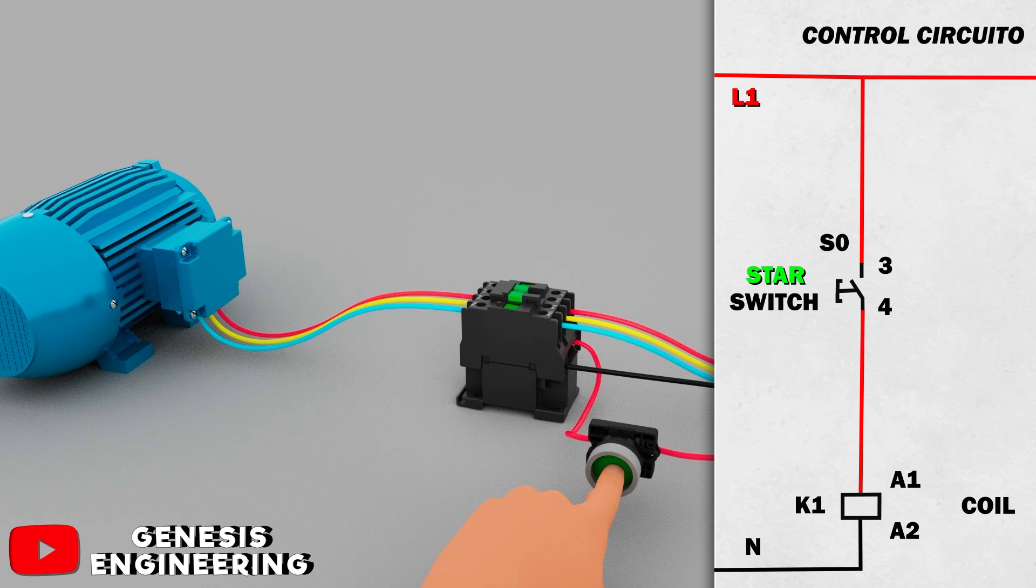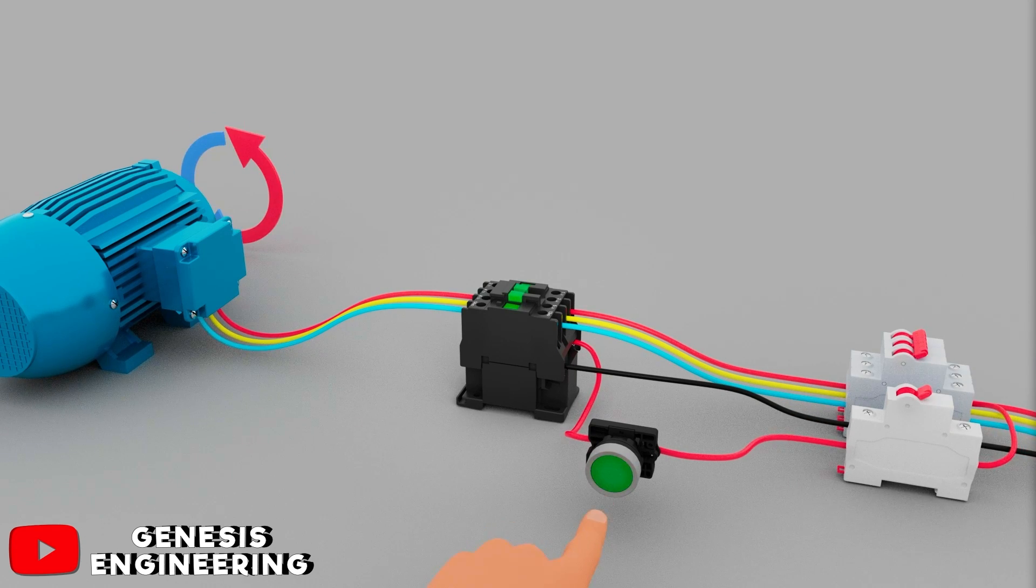When the button is pressed, the contactor will close the contacts and start the motor. However, it is necessary to keep the button pressed to keep the motor running. When the finger is removed from the button, the button returns to the old position and will turn off the motor, which is why we need the contact holding.